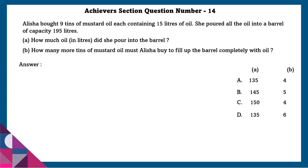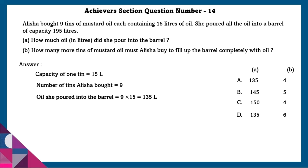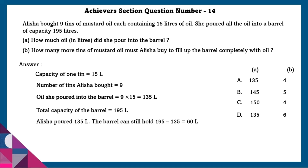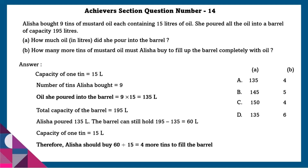Achieve section question number 14: Alicia bought 9 tins of mustard oil, each containing 15 litres of oil. She poured all the oil into a barrel of capacity 195 litres. Question A: how much oil in litres did she pour into the barrel? Capacity of 1 tin is 15 litres, and she bought 9 tins, so oil poured is 9 × 15 = 135 litres. Question B: how many more tins must Alicia buy to fill the barrel? The barrel holds 195 minus 135 = 60 more litres, and since 1 tin holds 15 litres, she must buy 60 ÷ 15 = 4 more tins.